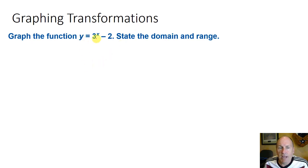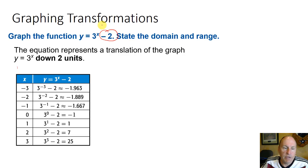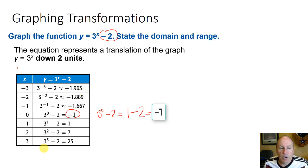Let's look at this in an example: y = 3^x - 2. We want to graph it and find the domain and range. This is like the parent function y = 3^x but shifted down two units because of the k term of negative 2. Plugging in x = 0 gives 3^0 - 2 = 1 - 2 = -1. For x = -3, we get 3^(-3) - 2, which is approximately -1.963. For x = 3, we get 3^3 - 2 = 27 - 2 = 25.